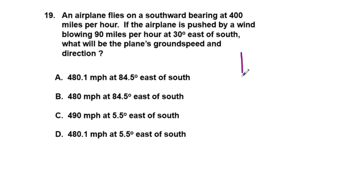We have an airplane that's flying southward, so I'm going to draw a down arrow at 400 miles per hour. The airplane is being pushed by a wind blowing 90 miles per hour, 30 degrees east of south. Here's the east direction over here to the right. If we keep going down and go 30 degrees east of south, that's going to be this type of angle here, 30 degrees. It's going to be 90 miles per hour.